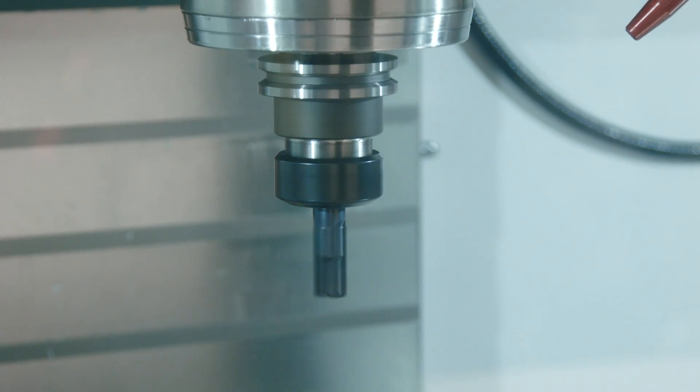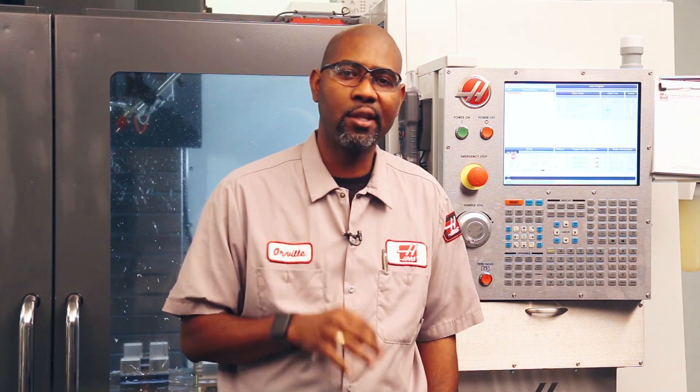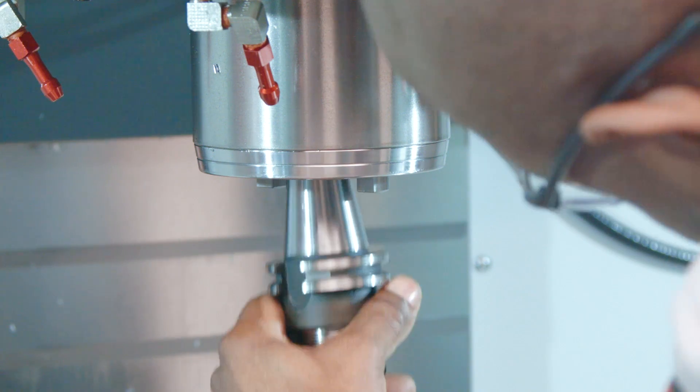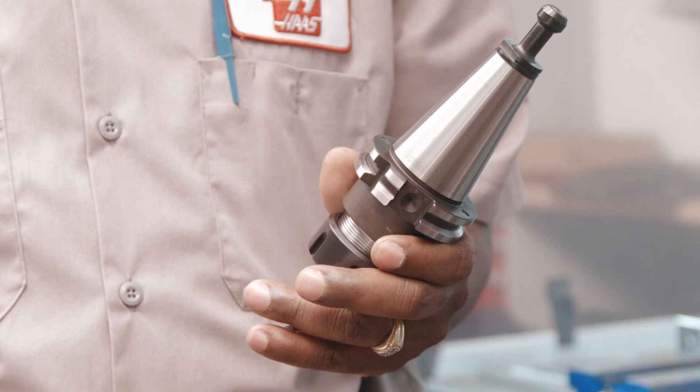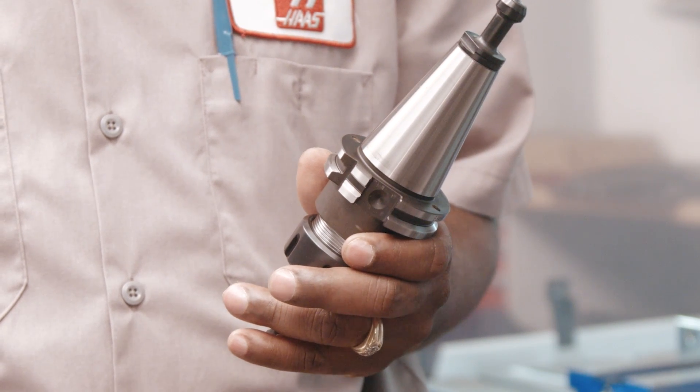If you believe that your spindle has excessive vibration, rather than assuming it's bad and replacing it, there's a simple way to balance that spindle right on the machine. But before we start working on the spindle, let's make sure the tool holder we're using isn't causing the vibration problem.